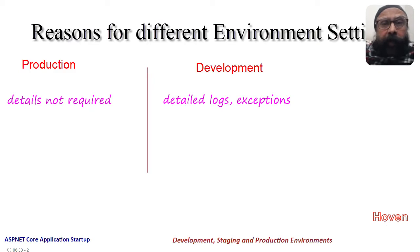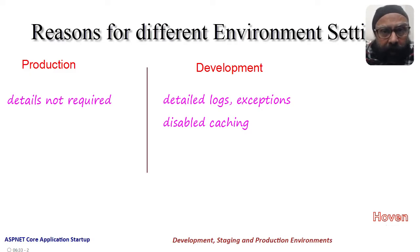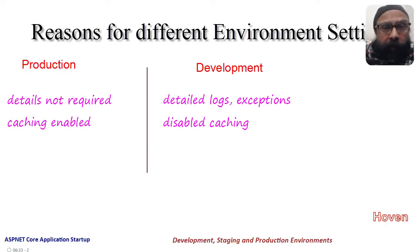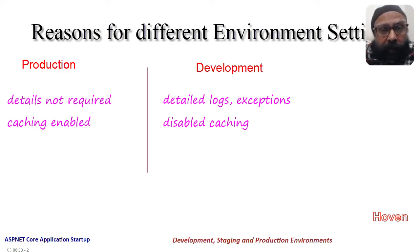Another example is that caching of images and static files can be disabled during development because frequent changes take place during coding. But caching must be enabled for an app in production because it can help save bandwidth for download of images, scripts, etc.